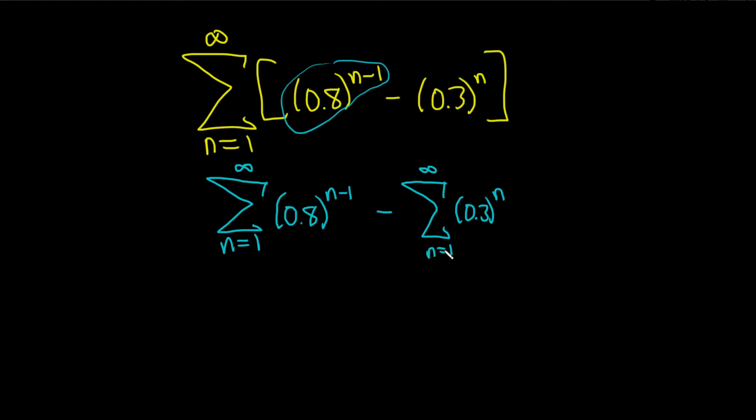So now we can use something called the geometric series test or simply GST. So the geometric series test says when you have a geometric series that looks like this, say a times r to the n or sometimes books will use this one, a times r to the n minus 1.